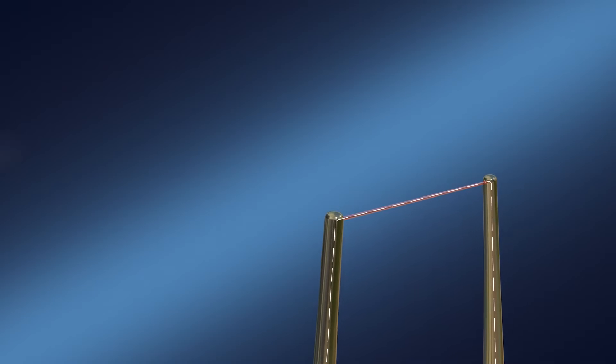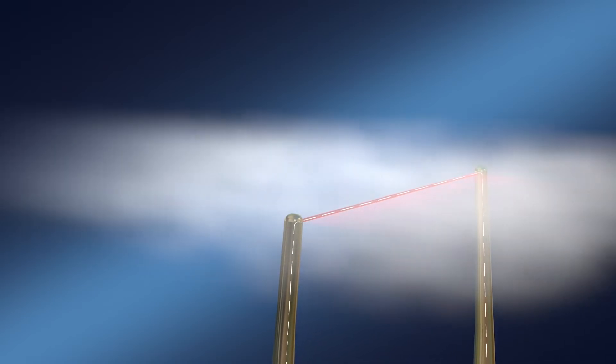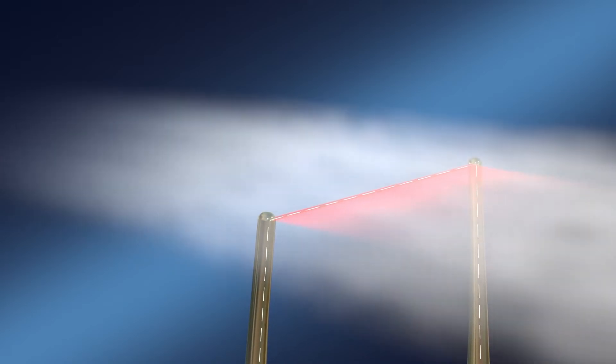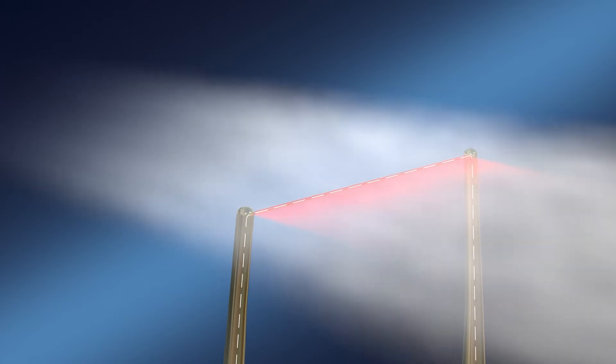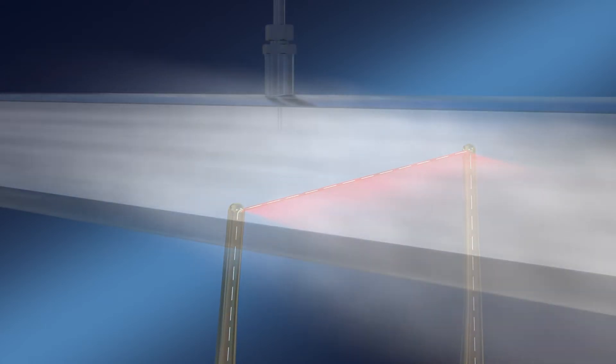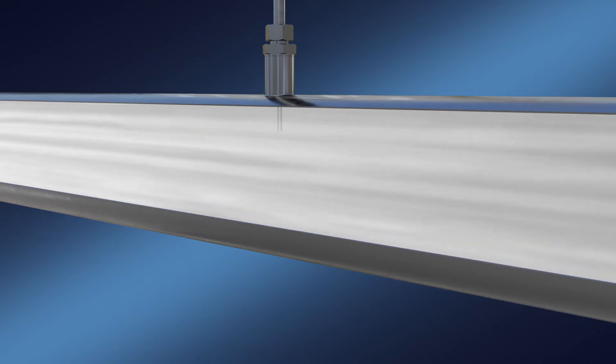In 1914, the Canadian professor L.V. King discovered a so far unknown correlation. When air flow surrounds a heated body, heat is transported to the medium being measured. The amount of heat is equivalent to the flow velocity. Today's thermal flow sensors are based on this physical principle.